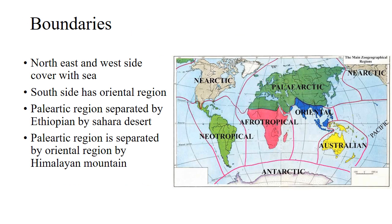Next are the boundaries. The north, east, and west sides of the Palearctic region are covered with sea. The south side borders the Oriental region. The Palearctic region is separated from the Ethiopian and Sahara Desert regions to the south. The Ethiopian region is also known as the Afrotropical region, shown in pink on the map. The Palearctic region is separated from the Oriental region by the Himalayan mountains and from the Ethiopian region by the Sahara Desert.